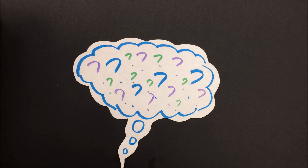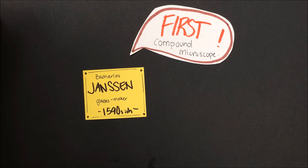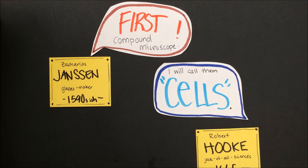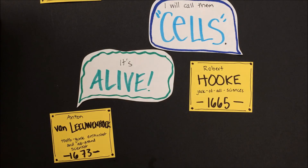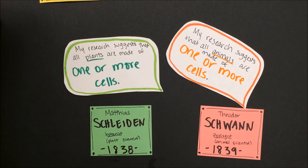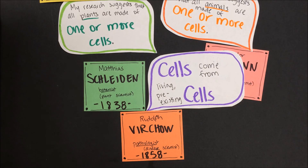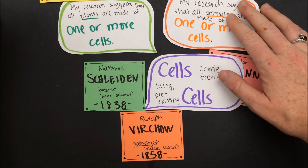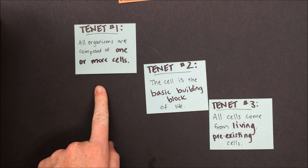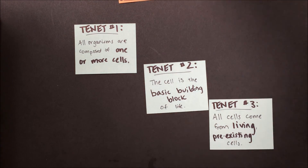In this unit, we learned about cell theory. Zacharias Janssen made the first compound microscope. Robert Hooke coined the term cells. Anton van Leeuwenhoek was the first to see living cells. Schleiden and Schwann studied multiple animal and plant tissues and concluded that all plant and all animal organisms are made of at least one cell. Their debate was finally settled when Rudolf Virchow came on the scene and said that all cells come from other living, pre-existing cells. Taken together, these findings create the three tenets of cell theory: all organisms are composed of one or more cells, the cell is the basic building block of life, and all cells come from living, pre-existing cells.